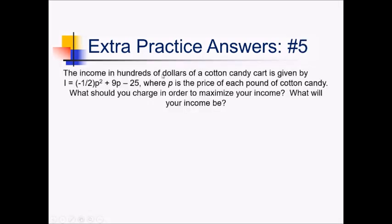For this real-life problem, the income in hundreds of dollars of a cotton candy cart is given by i equals this formula with p's, where p is the price of each pound of cotton candy. We want to know what we should charge per pound in order to maximize our income, and what that income will be. So we're trying to maximize a quadratic, which means we need to find the vertex. The maximum income will be the y-value of the vertex, and what we should charge will be the x-value of the vertex.